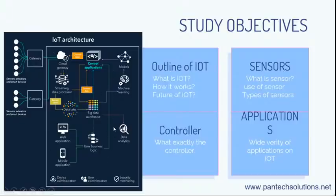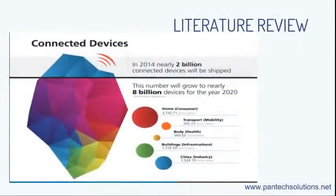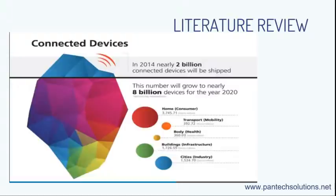The next slide is about a literature survey. In 2014, nearly 2 billion connected devices were being shipped. IoT devices will keep improving from 2014 onwards. Some countries are using different IoT fields — for example, in image processing, like OpenCV-based applications, they are using public cameras as image processing.